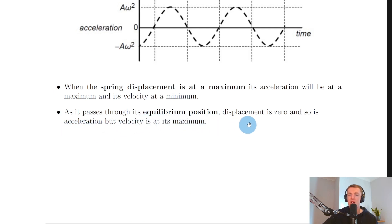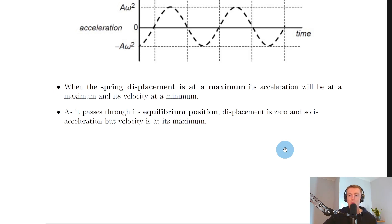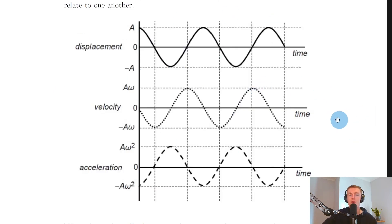As the object passes through its equilibrium position, displacement is zero and so is acceleration — and therefore the unbalanced or restoring force — but velocity is at a maximum. A good way to remember this is a simple pendulum: a mass on a string has maximum velocity when it passes through the middle (the equilibrium position), but displacement and acceleration are zero at those points.